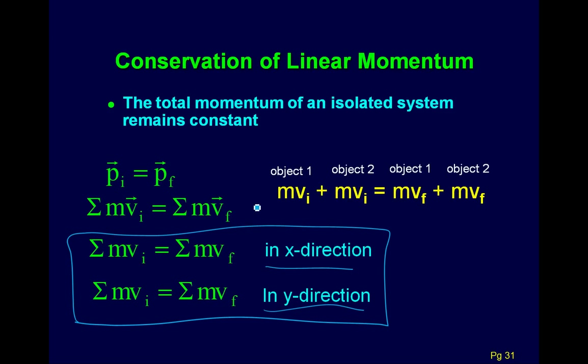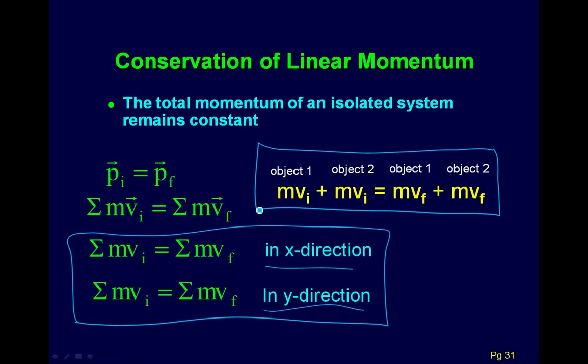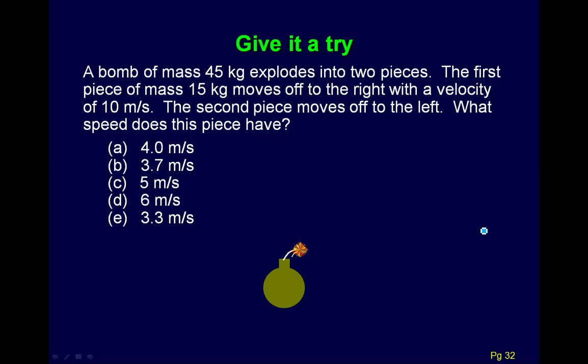The tricky part is knowing when you can use them. Generally, at least half of our momentum problems will involve only two objects. When that happens, you just write out mv_initial for the two objects and mv_final and set those equal. And of course if there's three objects, you just add another term on each side.